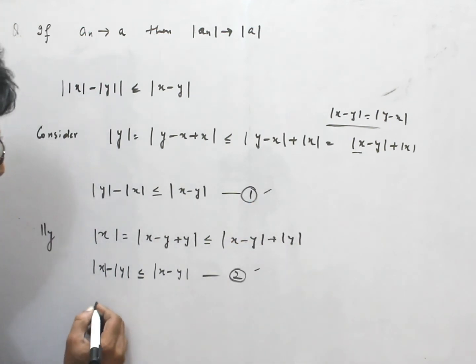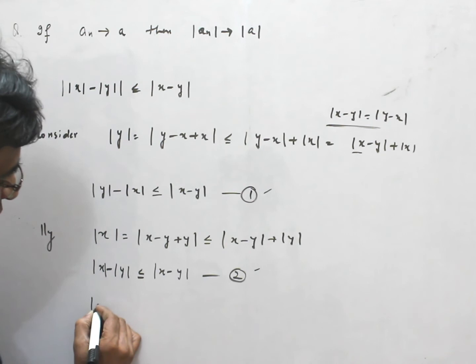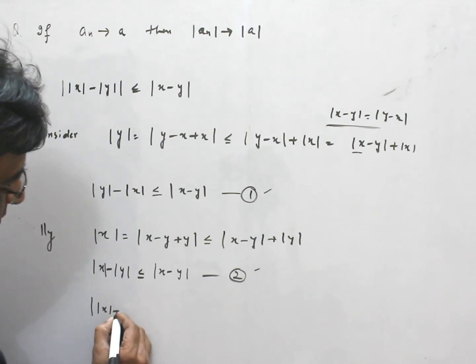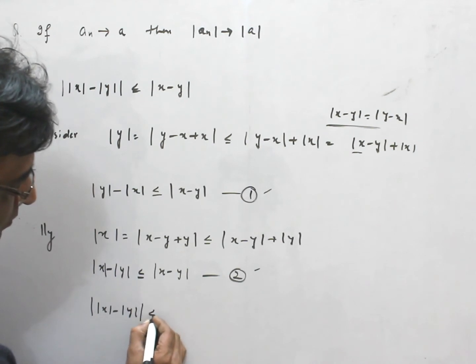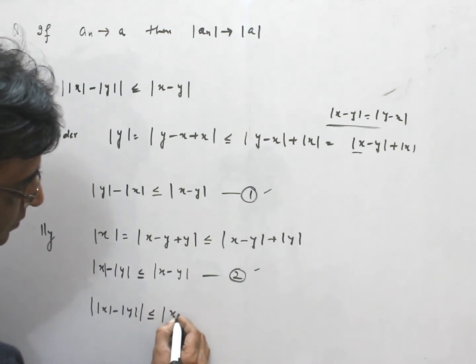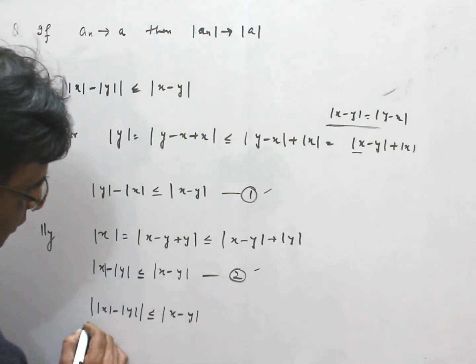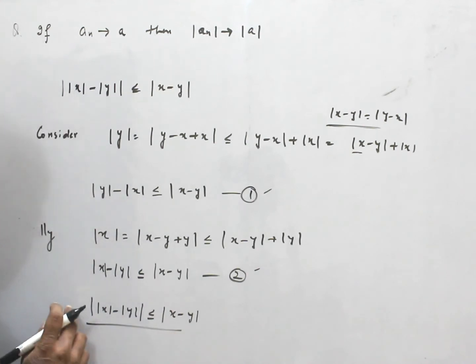So, from 1 and 2, I have norm of x minus x. So, this result, we use to prove this result.